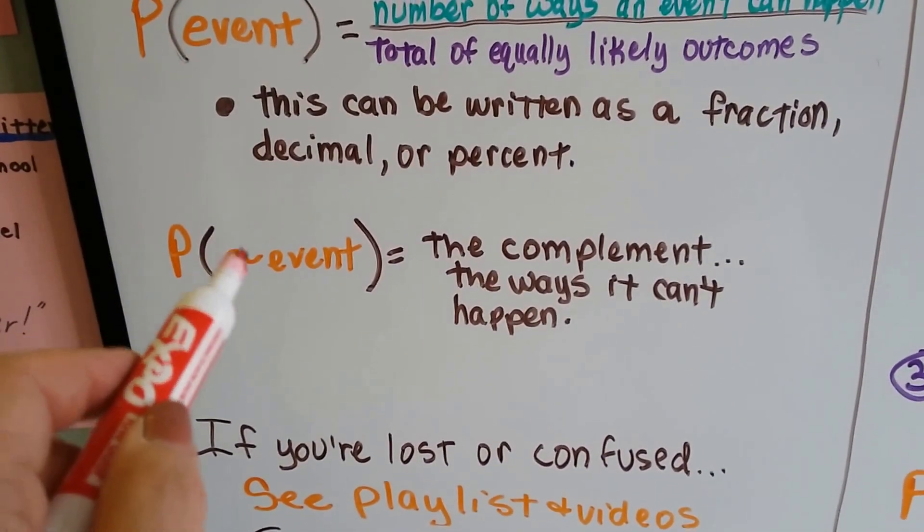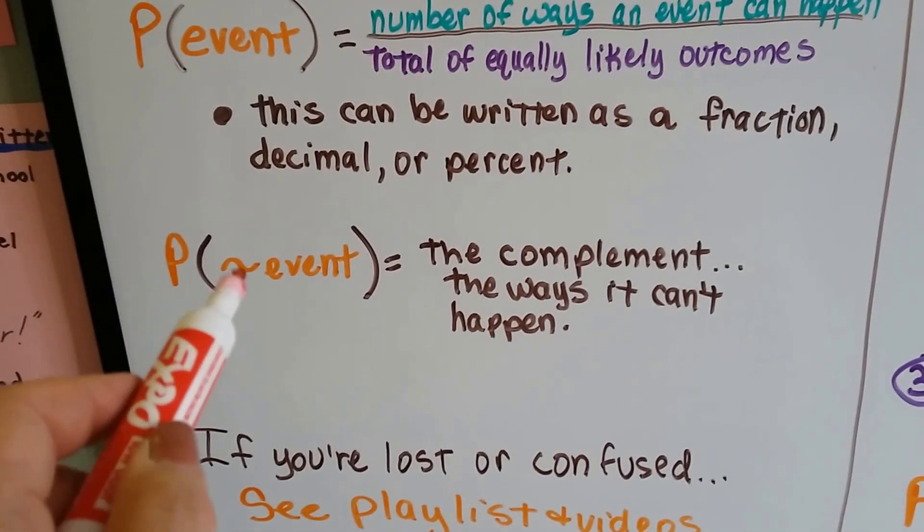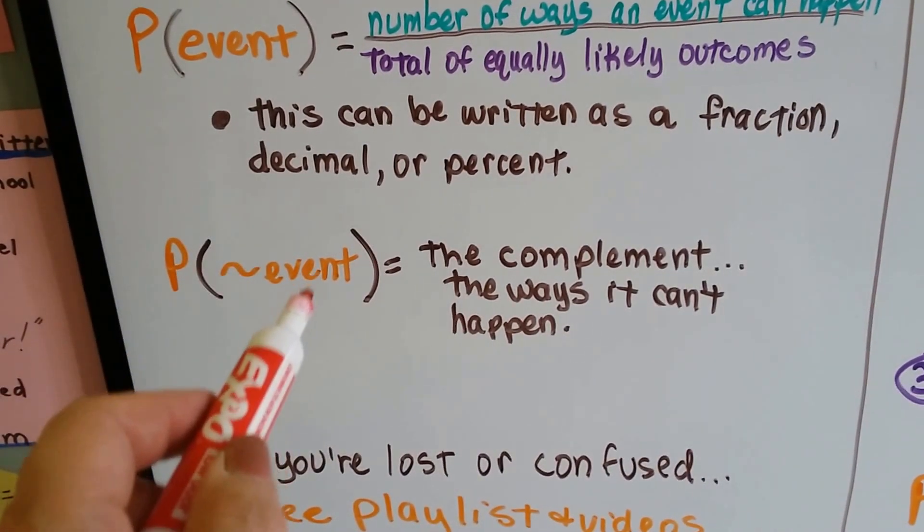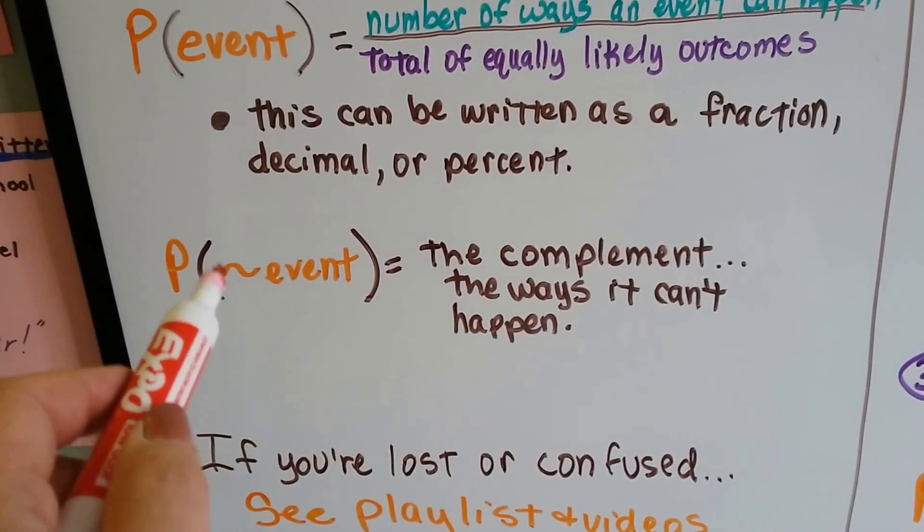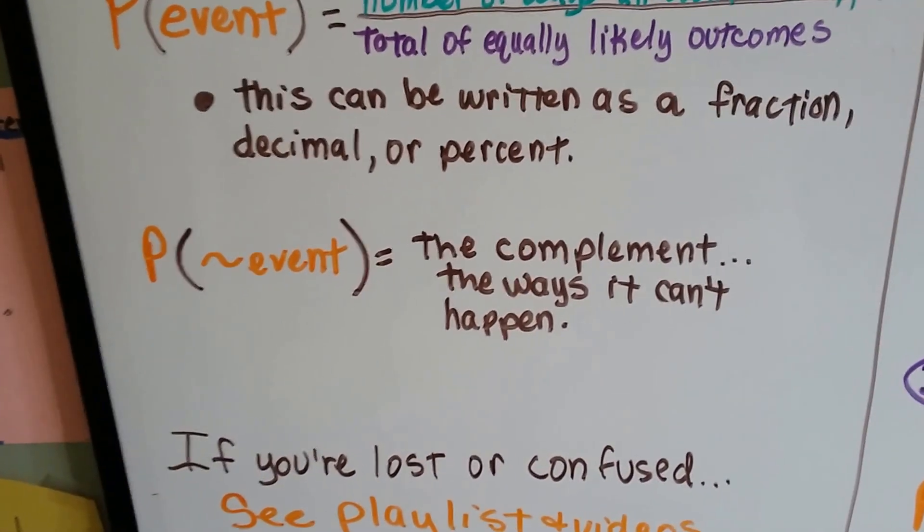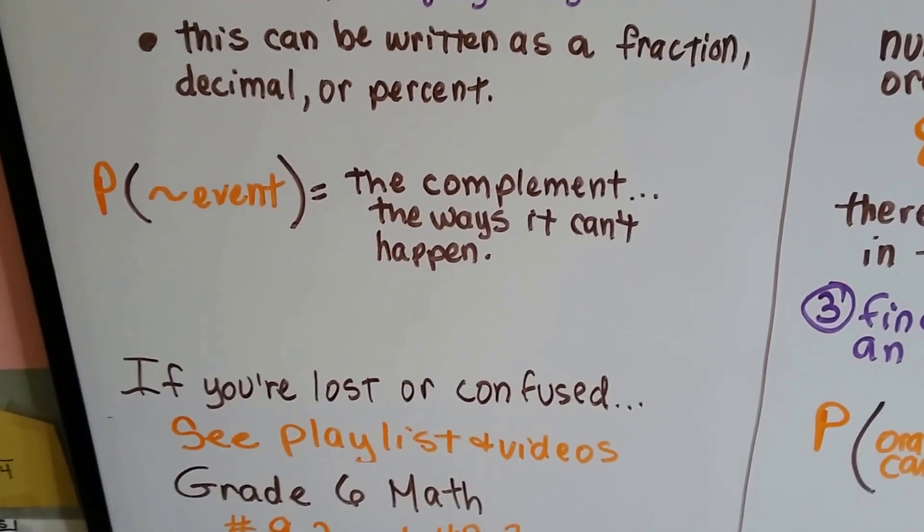The P and then this little swirly line and then the word event means the probability of it not happening. That's the probability of not having the event. So, remember this little tilde, this little swirl mark right here, this little curve is not in math logic. It's the complement, it's the way it can't happen.